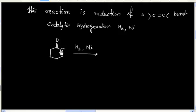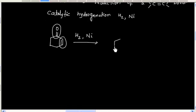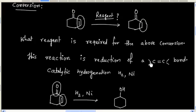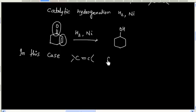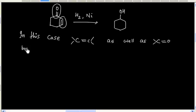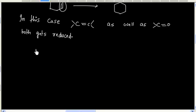However, catalytic hydrogenation reduces both the carbon-carbon double bond as well as the carbon-oxygen double bond. So to selectively reduce only the carbon-carbon double bond, we will use ketal formation.